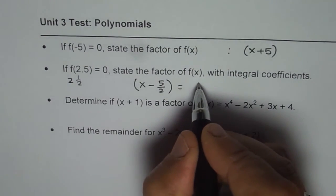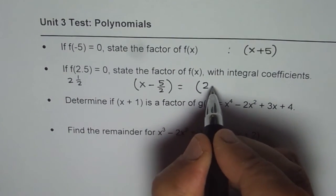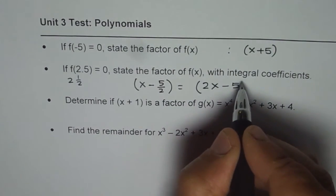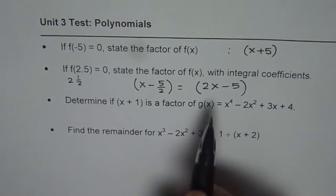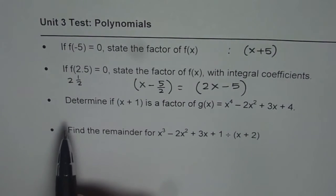And therefore, this factor should be written as (2x - 5). And that's what we mean. I hope this concept is clear.